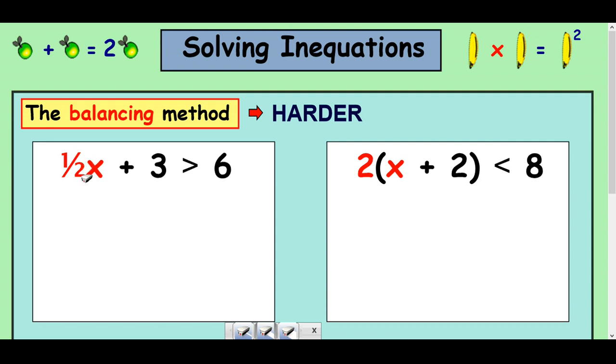So I'm going to times by 2 here to get rid of the fraction. I need to do it to here and I need to do it to here. So a half x times 2 is just 1x. 3 times 2 is just 6. And I better keep my greater than sign and 6 times 2 is 12. So there I've got rid of the fractions. It's quite a nice easy finish. If you just take away 6 from both sides, you've got x is greater than 6.